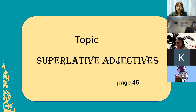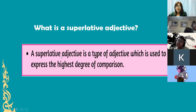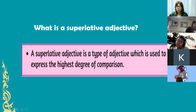We'll go to our topic this morning, which is superlative adjectives. It is on your book page 45. So what is a superlative adjective? A superlative adjective is a type of adjective which is used to express the highest degree of comparison. One is compared to a group of persons — the highest degree of comparison, which is the superlative adjective.